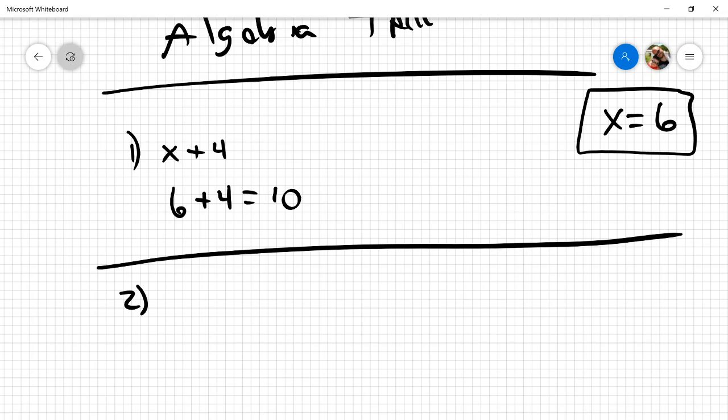All right, so let's go to two. Two is seven minus x. Remember, x is still six. Rewrite the equation. Seven minus six equals one.